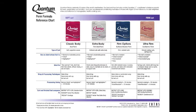Notice the perms are listed across the top of the page. Directly below each perm is listed the chemistry — is it an acid, alkaline, or exothermic? The next category is the type of curl that each will achieve. The bulk of the chart gives you information as to how to use the perm and what to expect. At the very bottom are comparisons to other manufacturers.